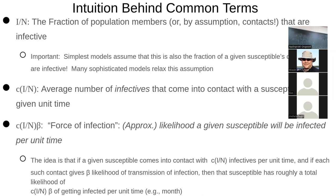I over N is the fraction of the population that's infected. C was the number of contacts per day that a susceptible had with anyone. So C times I over N is the number of contacts a susceptible would have with an infected person per day. For example, if you have contact with 100 people per day and 50% of the population is infected, you have contact with 100 times 0.5 — fifty infected people per day.